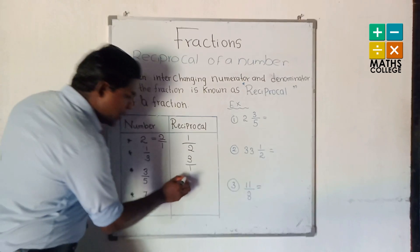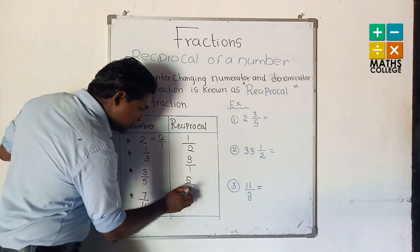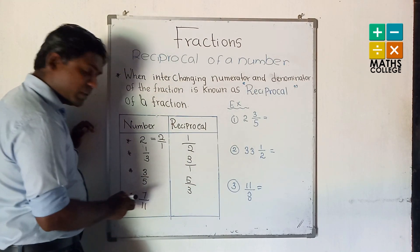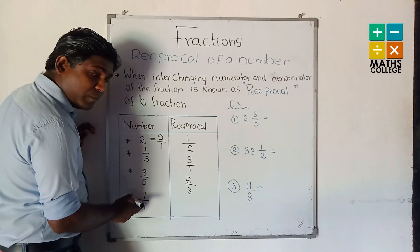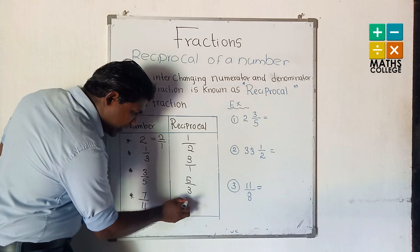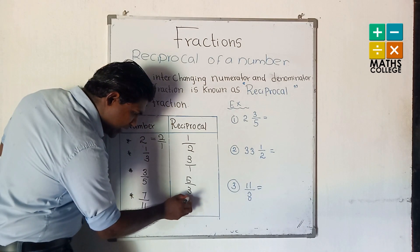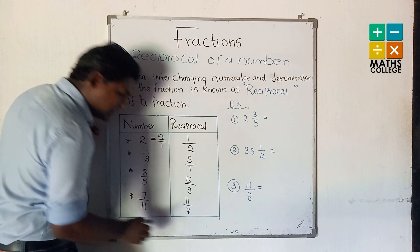For 5 upon 3, the reciprocal is 3 upon 5. For 7 upon 11, we can write the reciprocal as 11 upon 7.